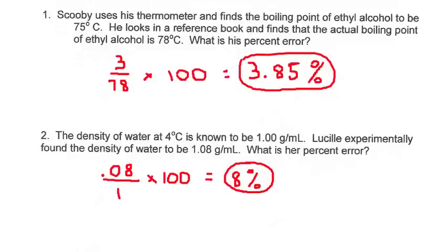Okay, so let's take a look at number one. Number one, your numerator will always be the absolute value of the difference between the two values.